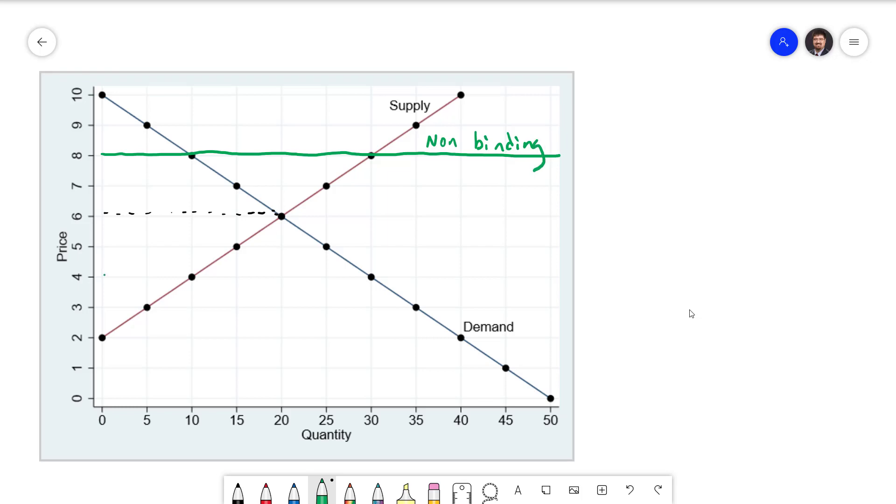Now suppose the price ceiling is 4. Again, I'm going to draw a horizontal line across the graph. This is a price ceiling so the price is not allowed to go over 4. This time there is going to be an effect because the market equilibrium price is 6. This is going to force the price in the market to come down to 4. At a price of 4, we have a quantity supplied of 10 and a quantity demanded of 30. Recall that when demand exceeds supply, we have a shortage.